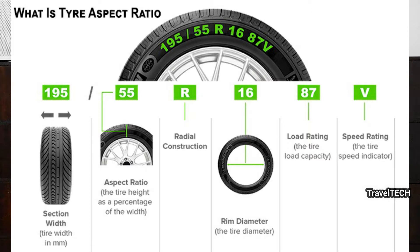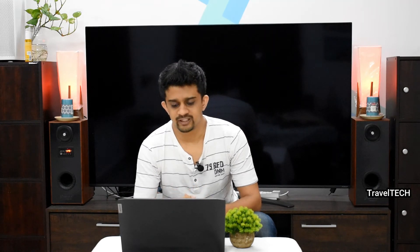The second number — in this example, 55 — represents the aspect ratio: the tire height as a percentage of the tire width. If the entire tire width area is considered 100%, 55 means the tire height covers 55% of the tire width. Tires that look broader from the side have a higher aspect ratio number, while thinner-looking tires have a number less than 50.